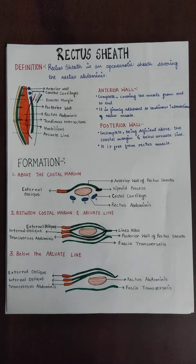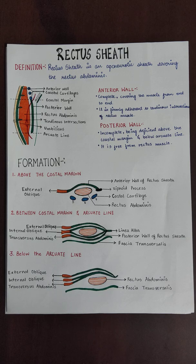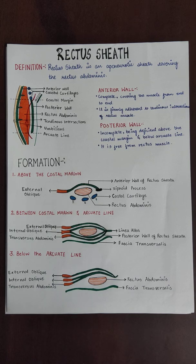Rectus sheath is an aponeurotic sheath covering the rectus abdominis muscles. Rectus abdominis is present on the anterior side of the abdomen. Aponeurosis and tendon are basically two things that can attach the muscle to the bone. The function of aponeurosis is to provide stability to the bone, while the function of tendon is to provide flexibility — to move the bone and allow the joint to be flexible. So there is a difference between both.